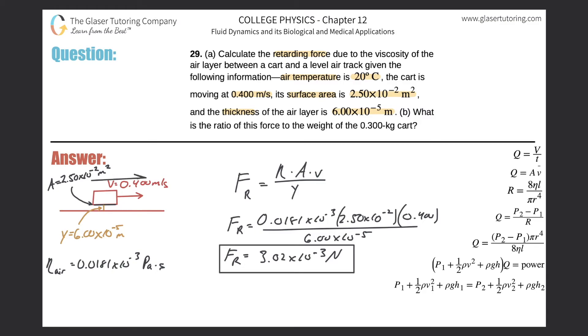Letter B asks: What is the ratio of this force to the weight of the 0.3 kilogram cart? So this is easy—what's the ratio? All we're going to do is take this 3.02 × 10^-3 force compared to the weight of the cart.